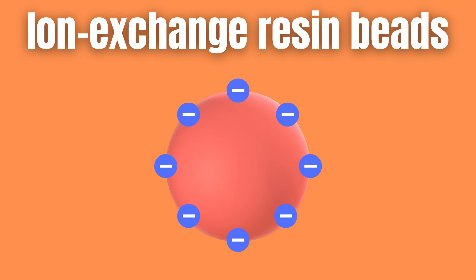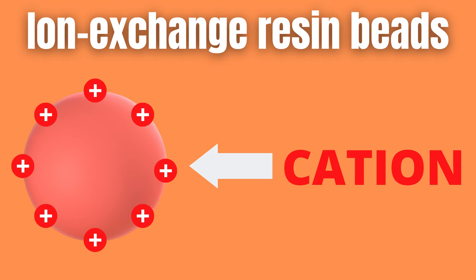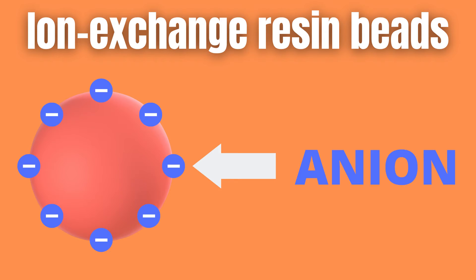These resins are called cations if they are positive or anions if they are negatively charged. These can either be weak or strong depending on what functional groups are used to make them.